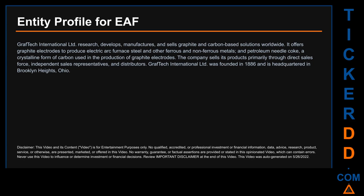Hello, my name is Carl. I searched the public web to find information about the company behind this ticker. GrafTech International Limited researches, develops, manufactures, and sells graphite and carbon-based solutions worldwide. It offers graphite electrodes to produce electric arc furnace steel and other ferrous and non-ferrous metals, and petroleum needle coke — a crystalline form of carbon used in the production of graphite electrodes. The company sells its products primarily through a direct sales force, independent sales representatives, and distributors. GrafTech International Limited was founded in 1886 and is headquartered in Brooklyn Heights, Ohio.